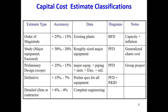This kind of evaluation doesn't give us a very accurate estimate of capital cost — it has an error between minus 15 to plus 25 percent, meaning whatever we calculate might differ significantly from the actual investment.